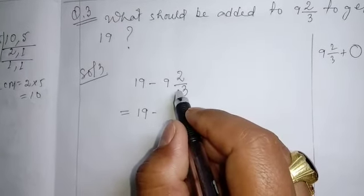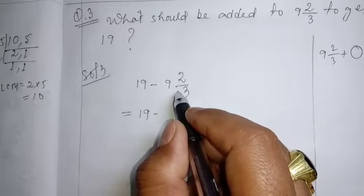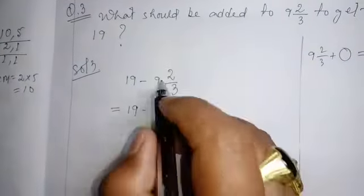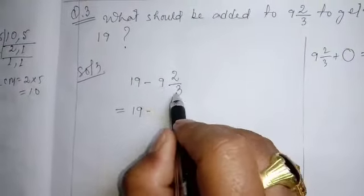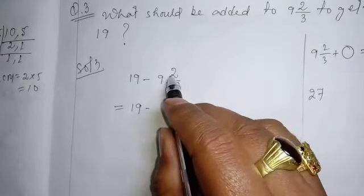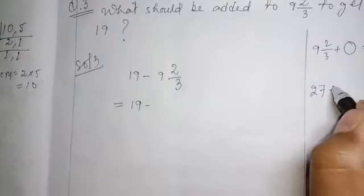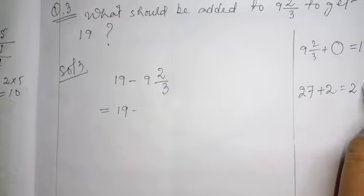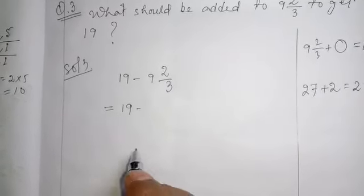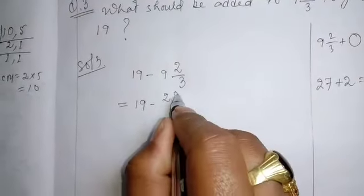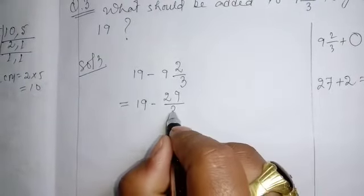19 minus. If they write in the mixed fractions at first, you convert it before you start solving. We will multiply this 3, 9 or 27. And we will add with the numerator plus 2, 29 by 3.